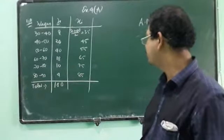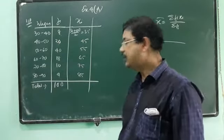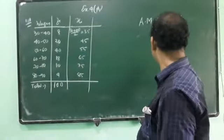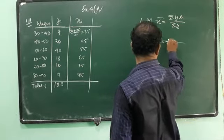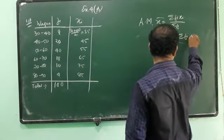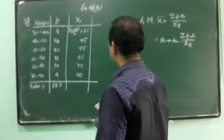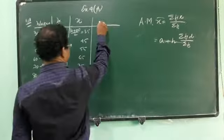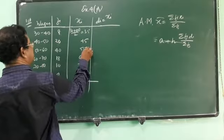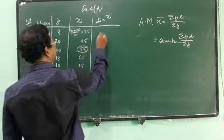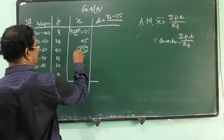You can use direct method, you can use assumed mean method, you can use step deviation method. Which one is affordable we can use. If you use the step deviation method, then of course it is a plus h summation fi di by summation fi. Here we have to introduce a new variable di, it is xi minus a.